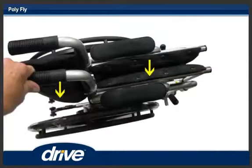Step 3. To unfold the chair, grasp one of the handles and tilt the chair slightly. Push down on the top of the cross brace on the side of the handle you are holding.